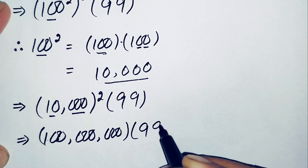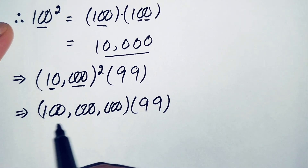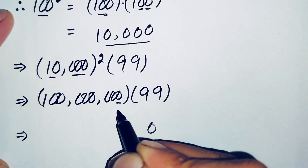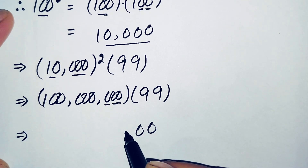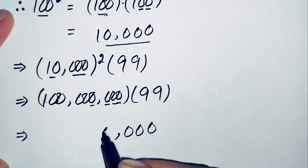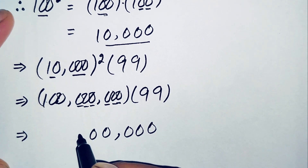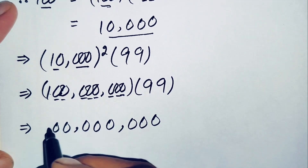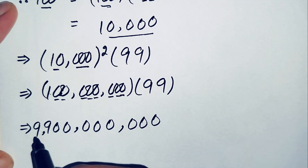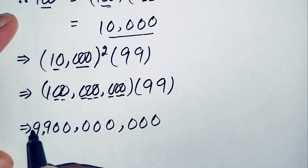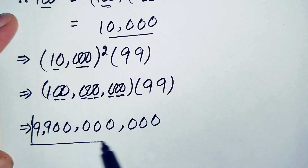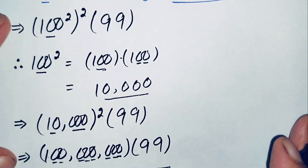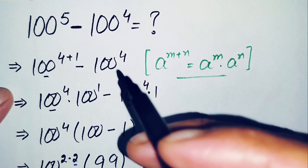Finally, we multiply 100 million by 99. Since 100 million has eight zeros, multiplying by 99 gives us 9,900,000,000. So the value of 100 million times 99 is 9 billion 900 million, which is our final answer for this simplification problem.